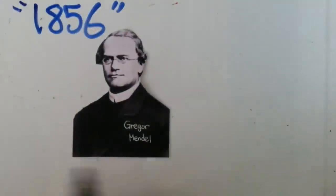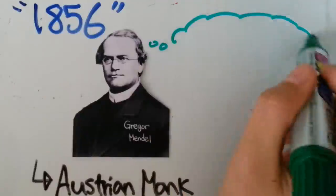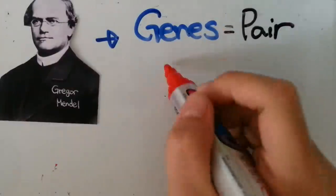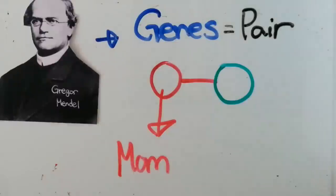In 1856, an Austrian monk named Gregor Mendel began his research about inheritance with his pea plants. He inferred that genes are in pairs, one from each parent.